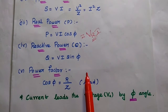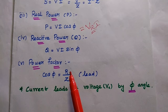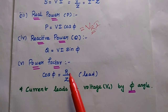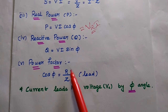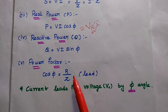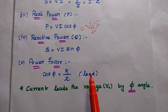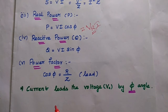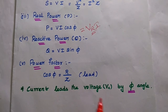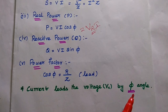The power factor is cos(phi) = R/Z, that is the resistance to the impedance value. This is a leading power factor. Finally, we can say the current always leads the voltage by the phase angle phi in an RC series circuit.